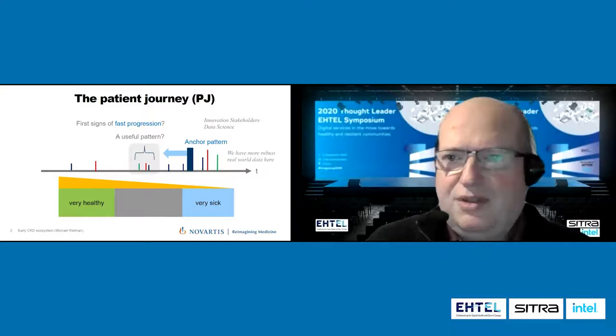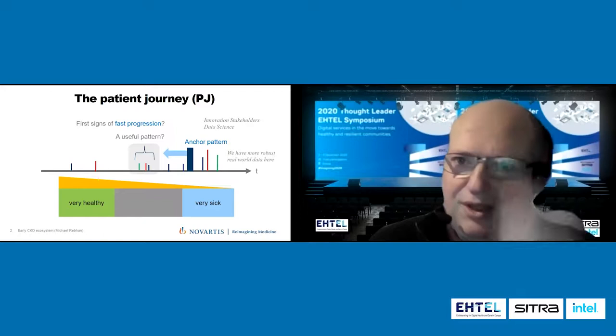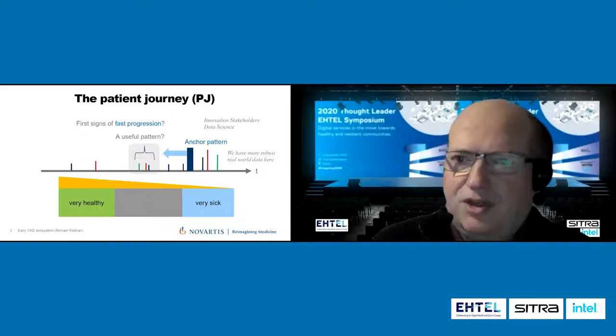What I'm talking about here as a problem is related to chronic diseases — the early stages of those chronic diseases. There's an anchor pattern on the right side in the patient journal where people are very sick. You can measure a number of healthcare events: the cost, the burden, the pain, the effect on the families and communities. We have a lot of data already for understanding those anchors.